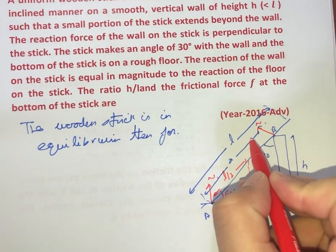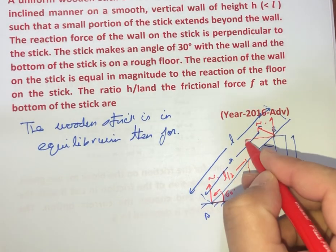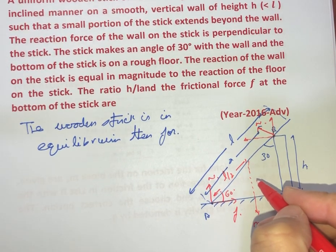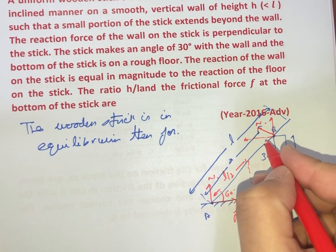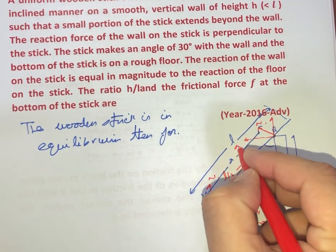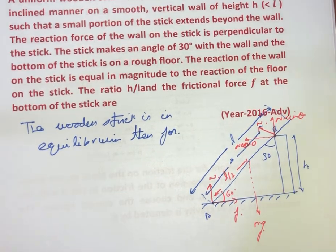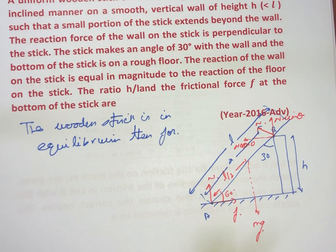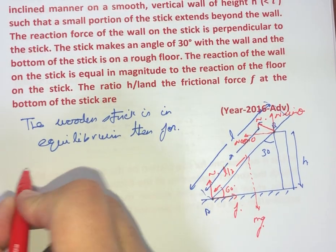Then let us find out the equations for vertical equilibrium as well as horizontal equilibrium. And this normal can be divided into two parts. This will be N cos of 30, N cos of theta. And this will be N sin theta. So for vertical equilibrium.